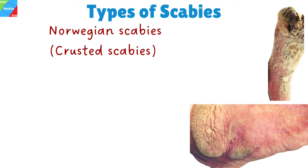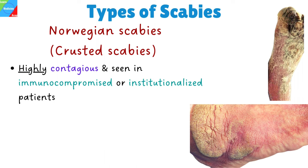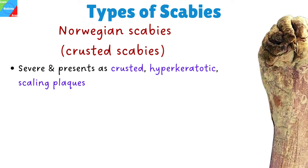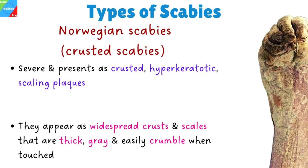What are the different types of scabies? The first type is Norwegian scabies, also known as crusted scabies. It is a highly contagious form of scabies often seen in immunocompromised individuals, or those with a weakened immune system, or debilitated, often institutionalized patients. The patient is infested with large numbers, often thousands to millions of Sarcoptes mites. Norwegian scabies presents as crusted, hyperkeratotic, scaling plaques, which may be generalized or localized to the hands and feet. They appear as widespread crusts and scales that are thick, gray, and easily crumble when touched.